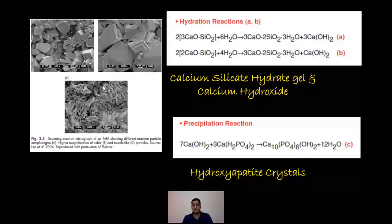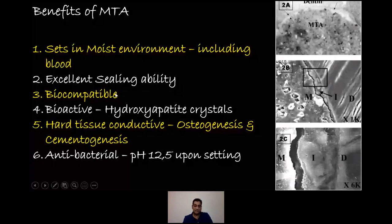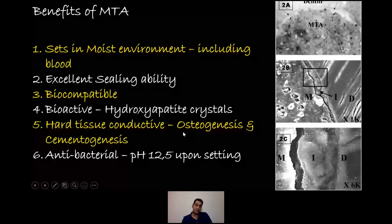MTA undergoes two reactions in the body. The first is a hydration reaction — it combines with water to form a calcium silicate hydrate gel, which when solidified forms a crystal. Under scanning electron microscopy it comprises two crystals: cubic crystals and needle-like crystals. The needle-like crystals sit between the cubic crystals lending support. When it comes into contact with tissue fluids, it draws phosphate to form hydroxyapatite crystals on the MTA crystal itself, which increases adhesion with dentine. It has a pH of 12.5 on setting, making it highly antibacterial.